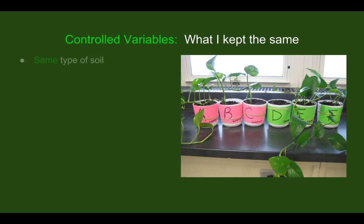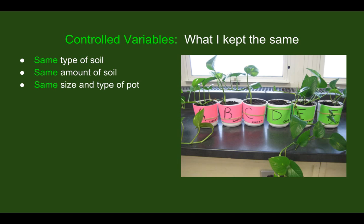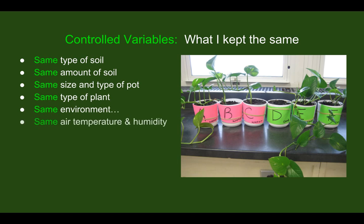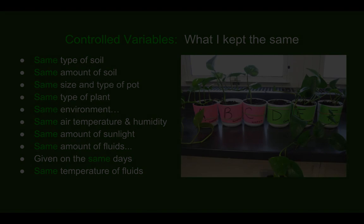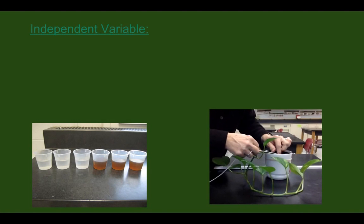The control variables include: the same type of soil, the same amount of soil, the same size and type of pot, the same type of plant, the same environment including the same air temperature and humidity, the same amount of sunlight, and the same amount of fluids given on the same days at the same temperature.